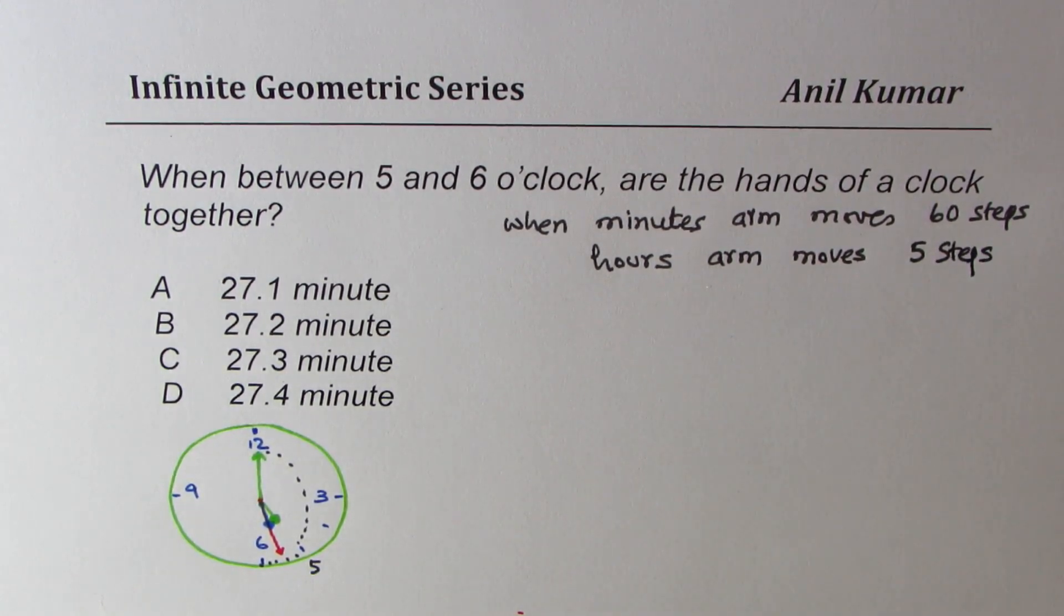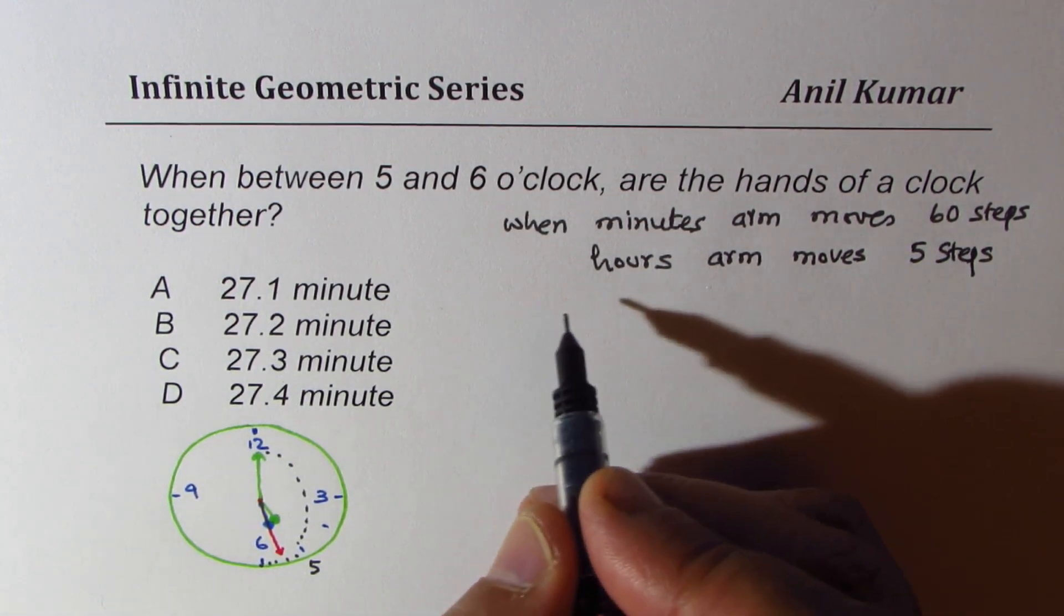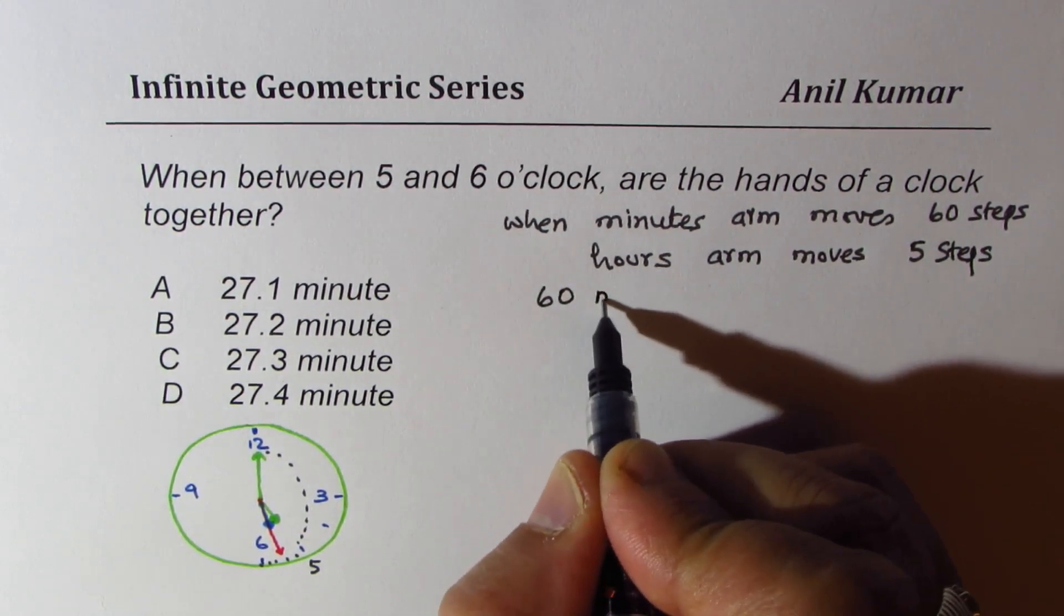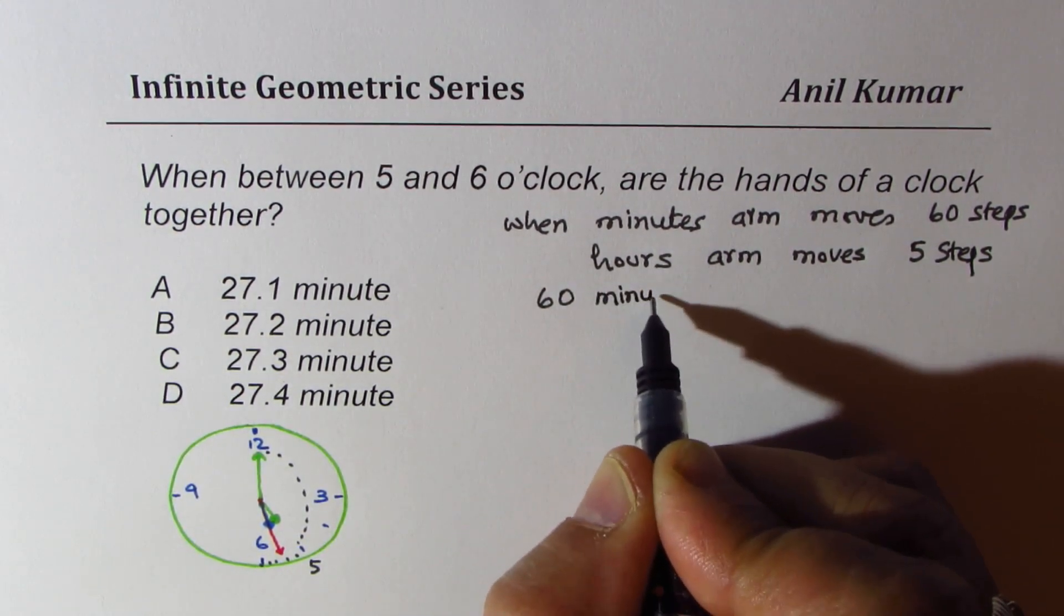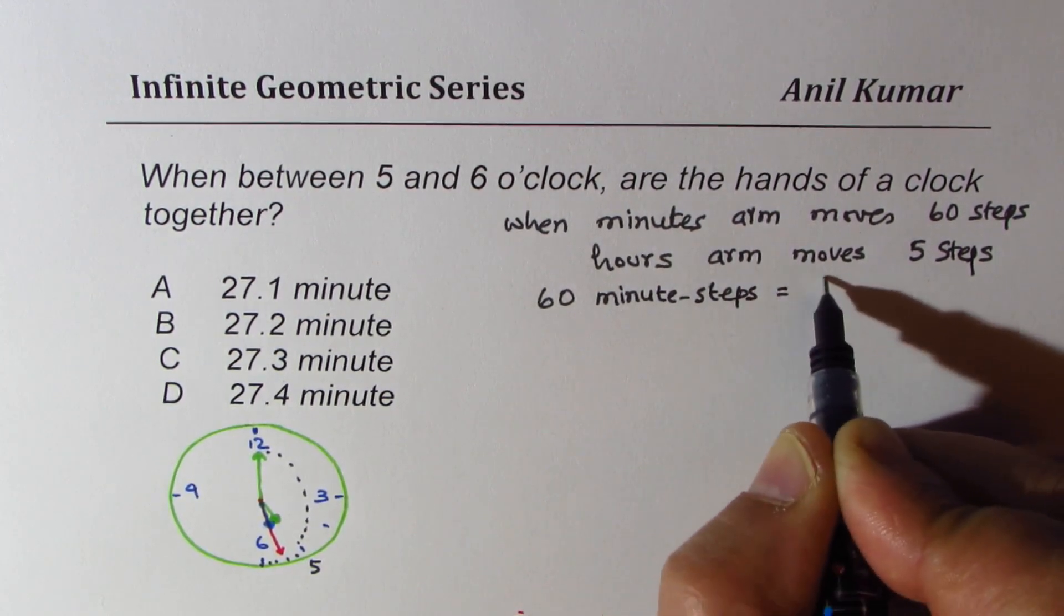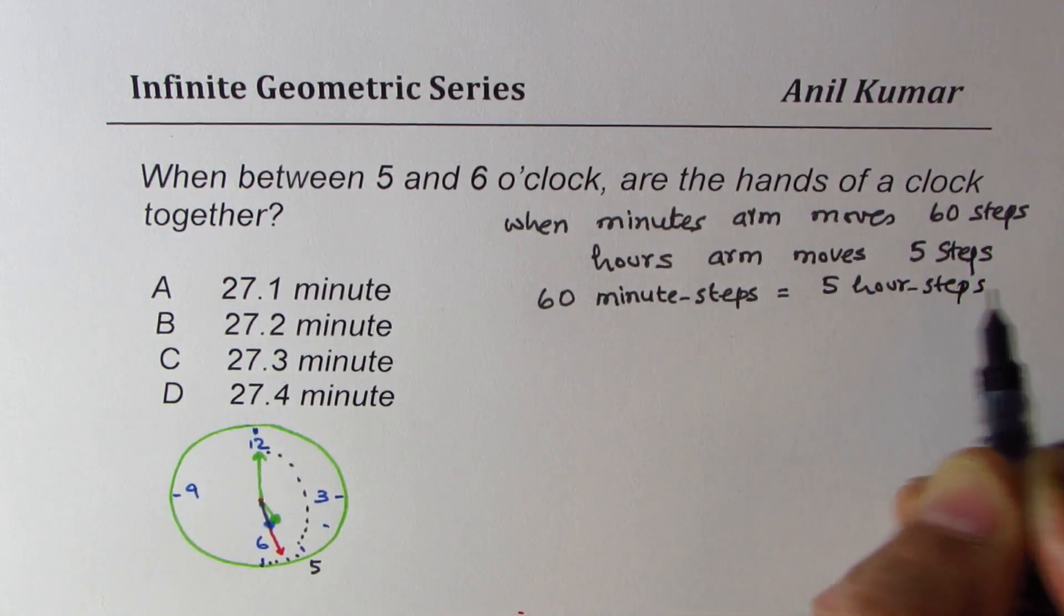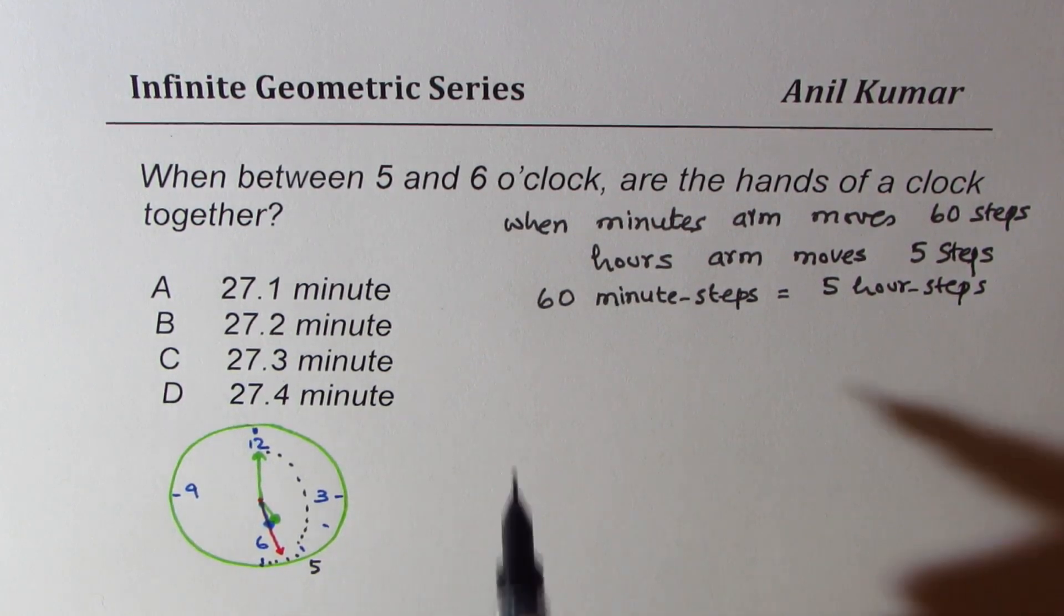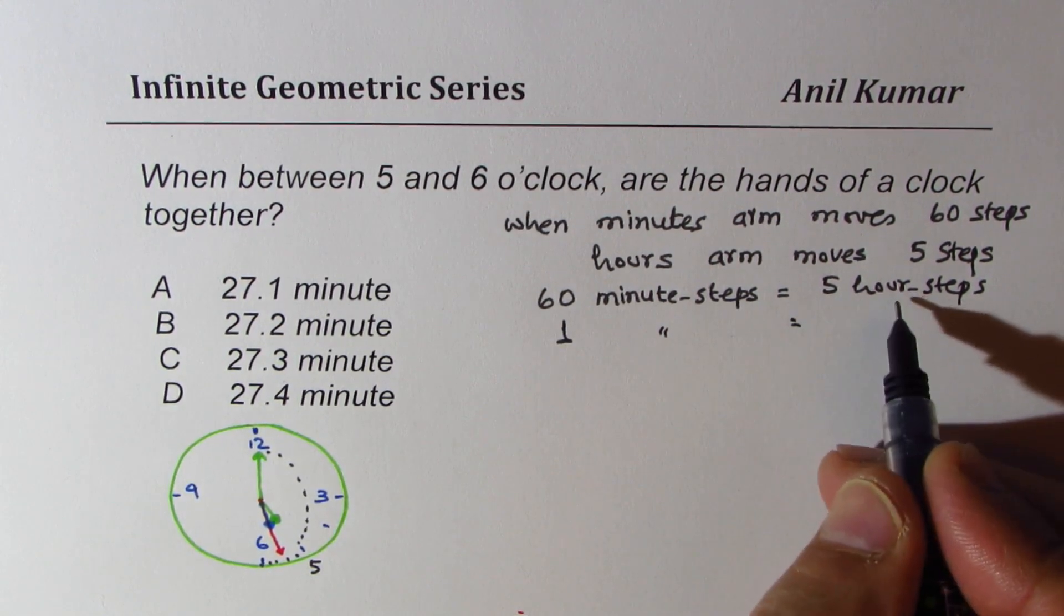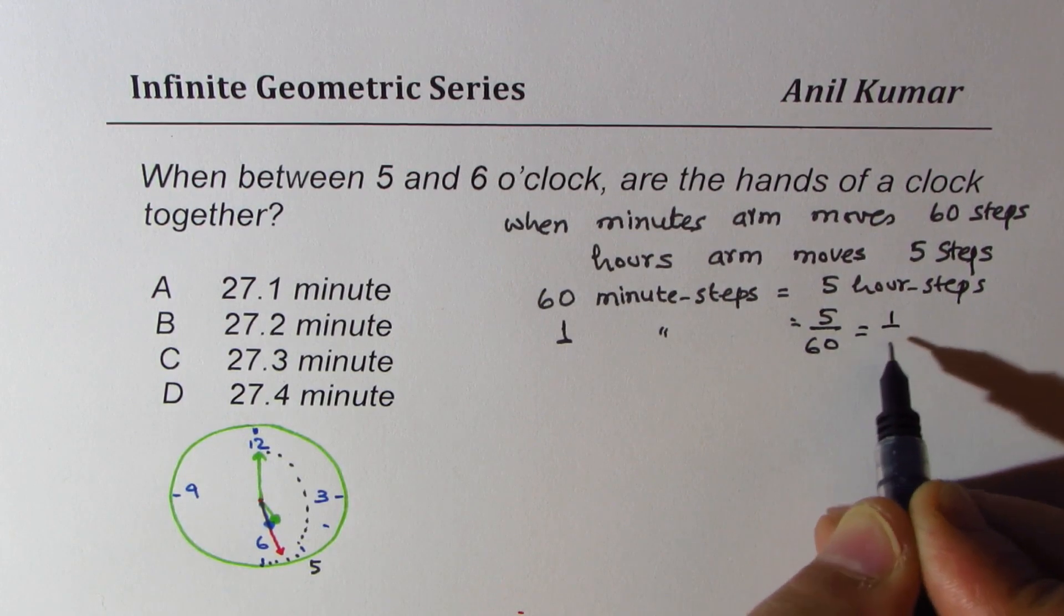Now to solve such questions we have to use the same unit. So what we are trying to say here is that in 60 steps, 60 minute steps equals to five hour steps. So every minute, how many steps will the hour move will be 5 over 60, which is 1/12.